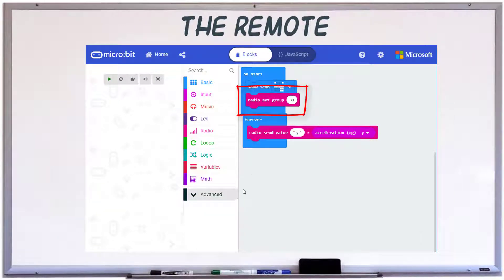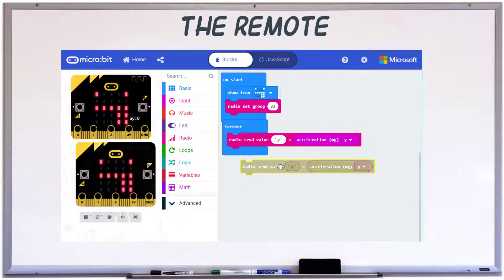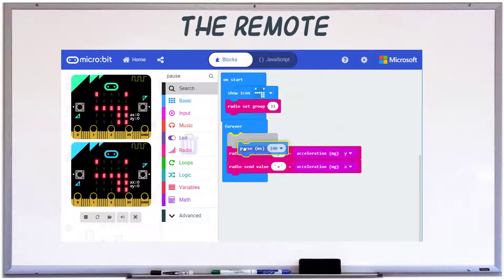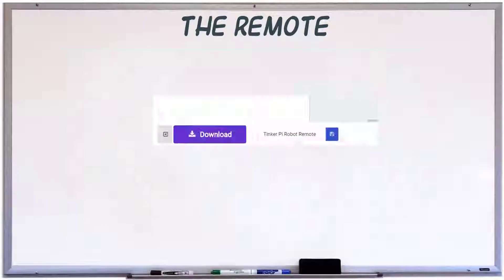We'll use one program for the remote control and another for the robot. We'll start with the remote. First, set the radio frequency to a number between 1 and 100. Duplicate the radio send block. As we tilt the micro:bit, we're going to send x equals and the value of the x-axis and y equals and the value of the y. Download the hex and save it to your first micro:bit, the remote.